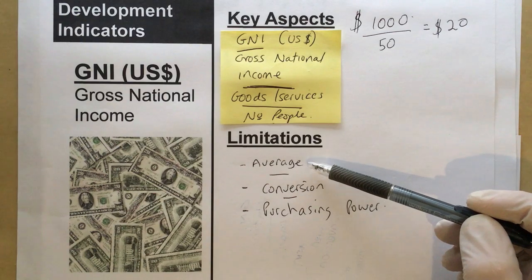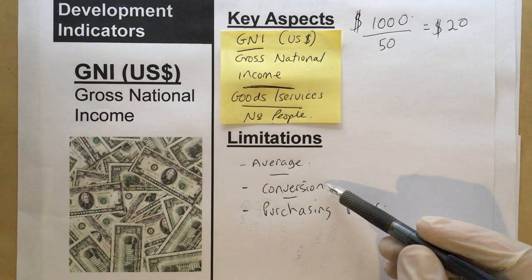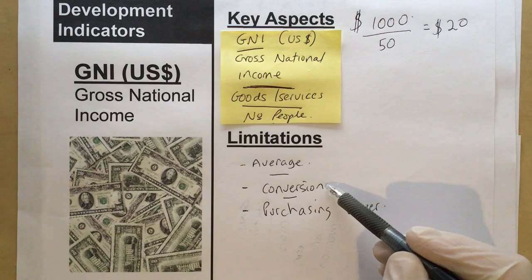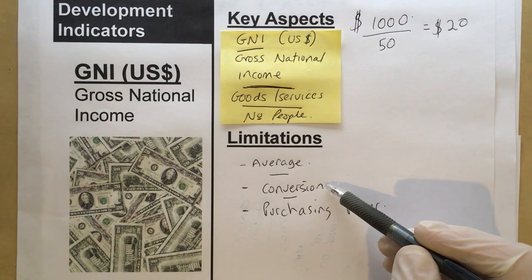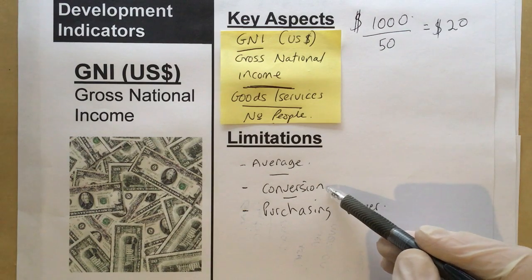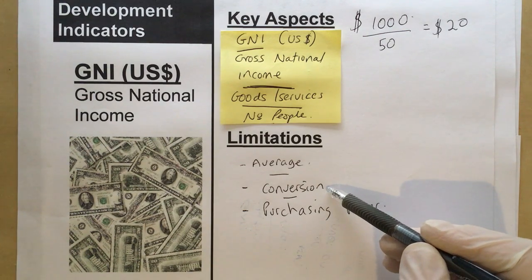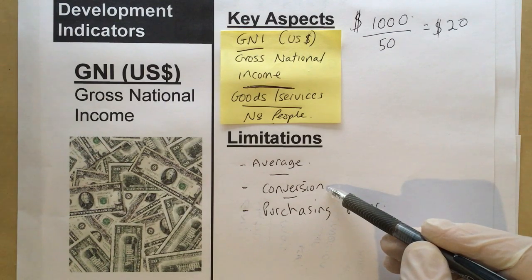Another limitation is the conversion rate. People who've been abroad and changed money into euros or dollars will understand that sometimes your money buys more or less depending on the exchange rate. The GNI is calculated at the point that conversion takes place, so it might go up or down just based on that day's conversion rate.